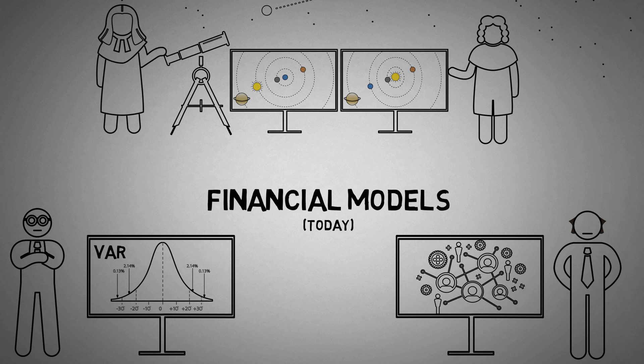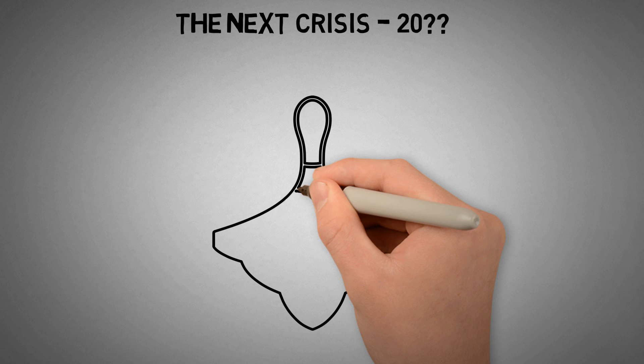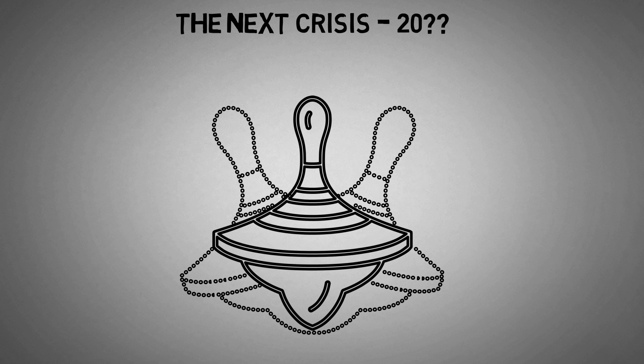And using this model again today, we're able to see that a massive financial crisis isn't looming, but is in the process of arriving. Unfortunately, complexity theory cannot tell us precisely when the next crisis will arrive, but it does tell us that the system is starting to wobble out of control. This is just like how a spinning top will begin to wobble with increased violence just before it spins out of control.